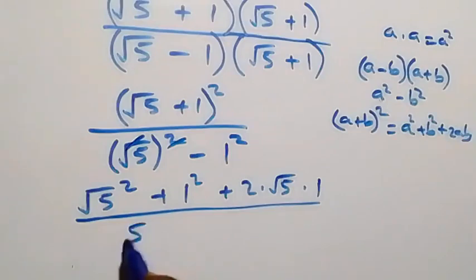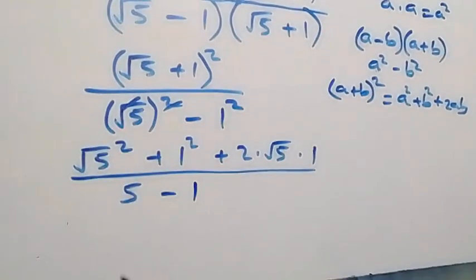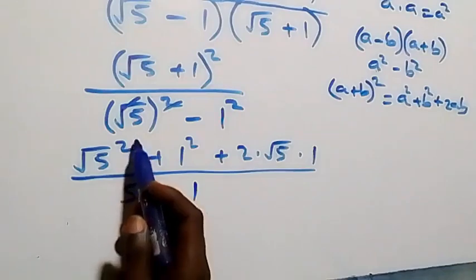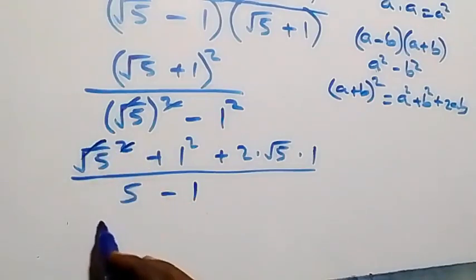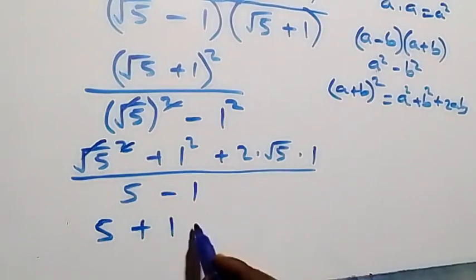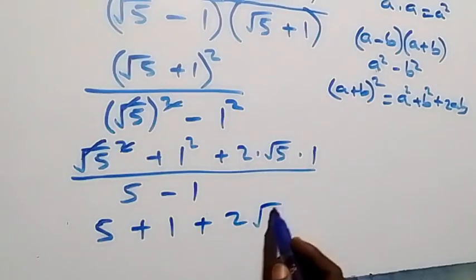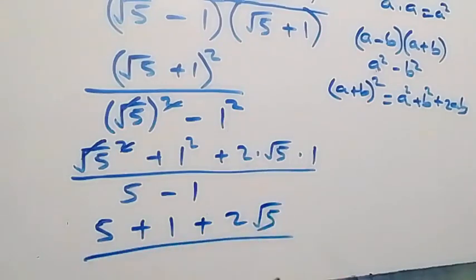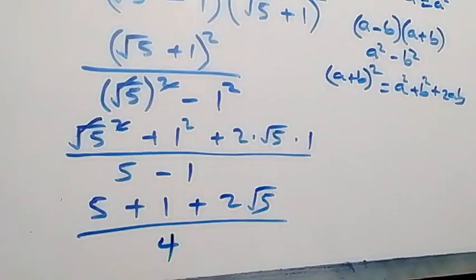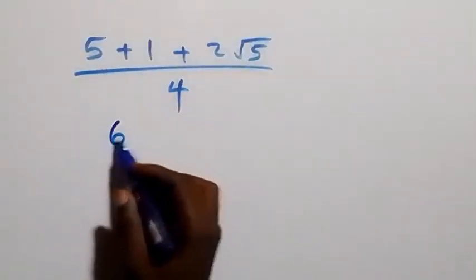Simplifying: the square cancels the square root, so root 5 squared is 5, and 1 squared is 1, so the denominator is 5 minus 1 = 4. In the numerator, similarly we get 5 plus 1 plus 2 root 5, divided by 4.